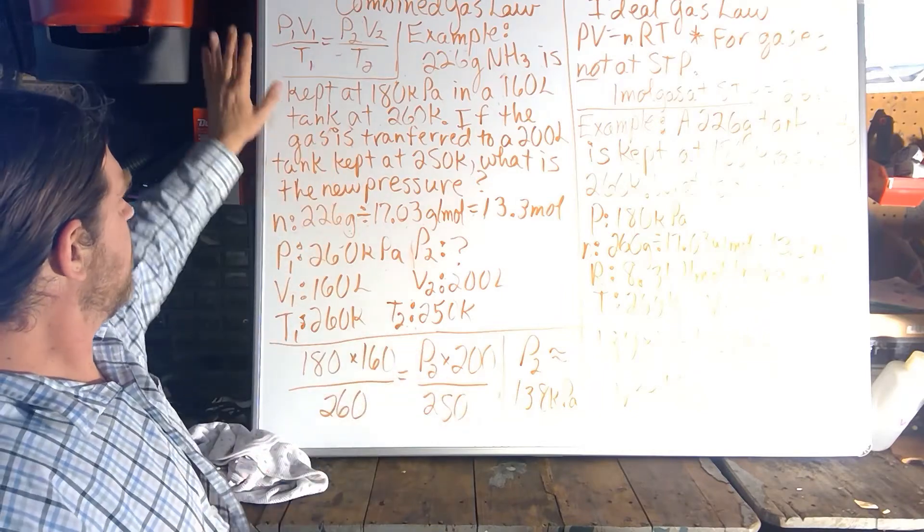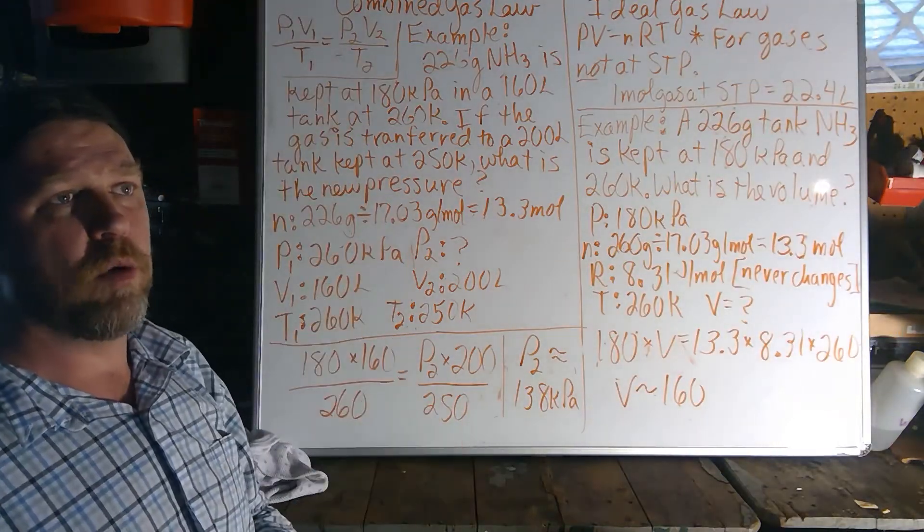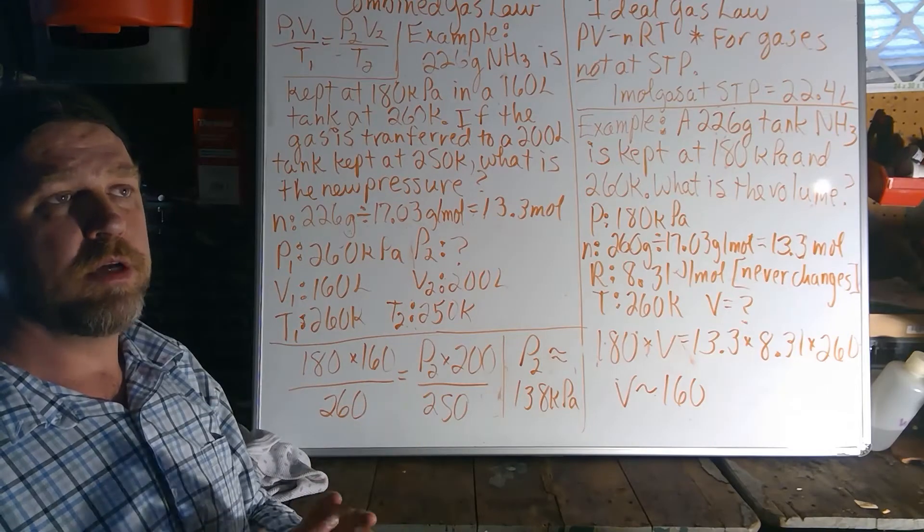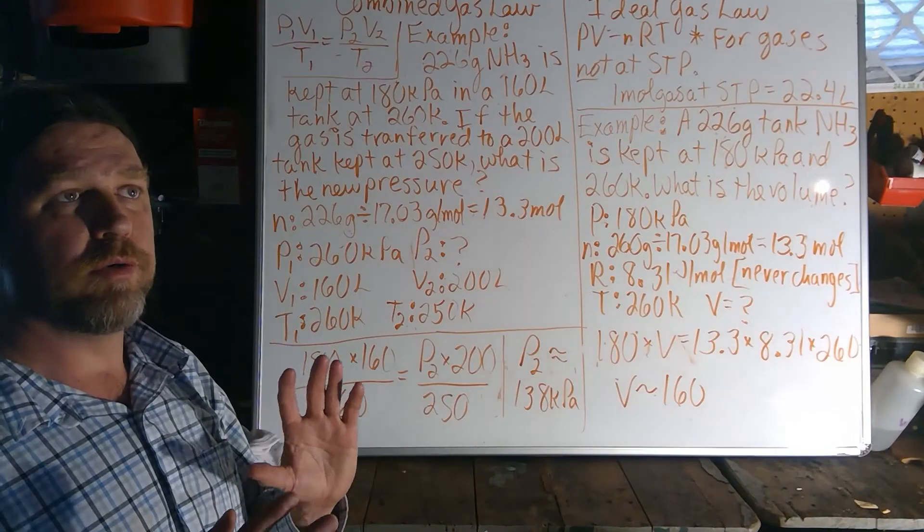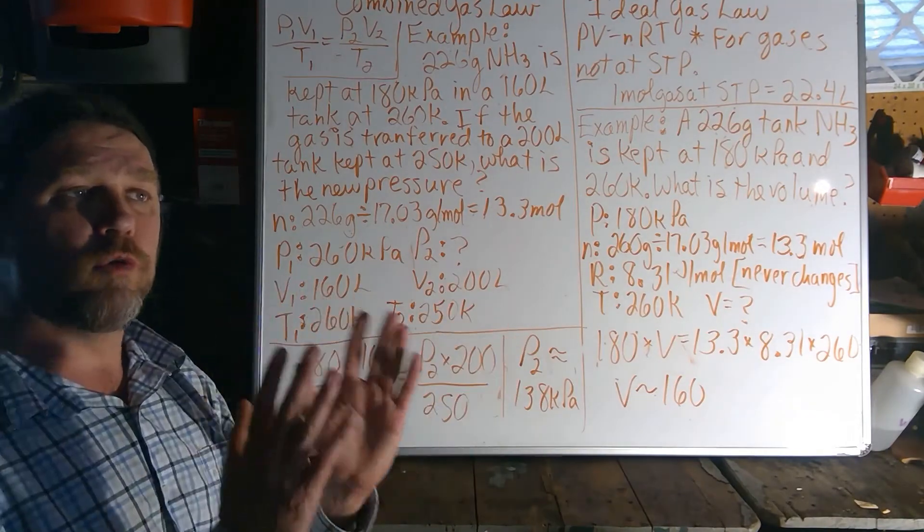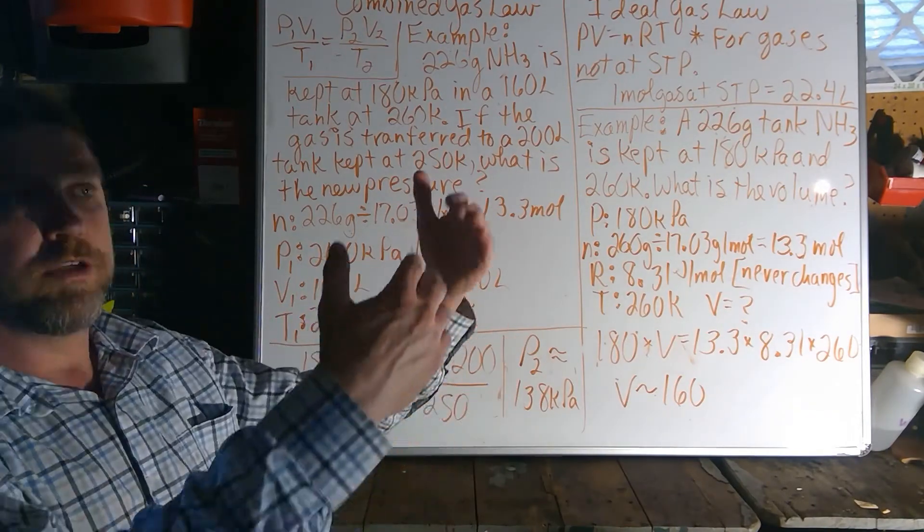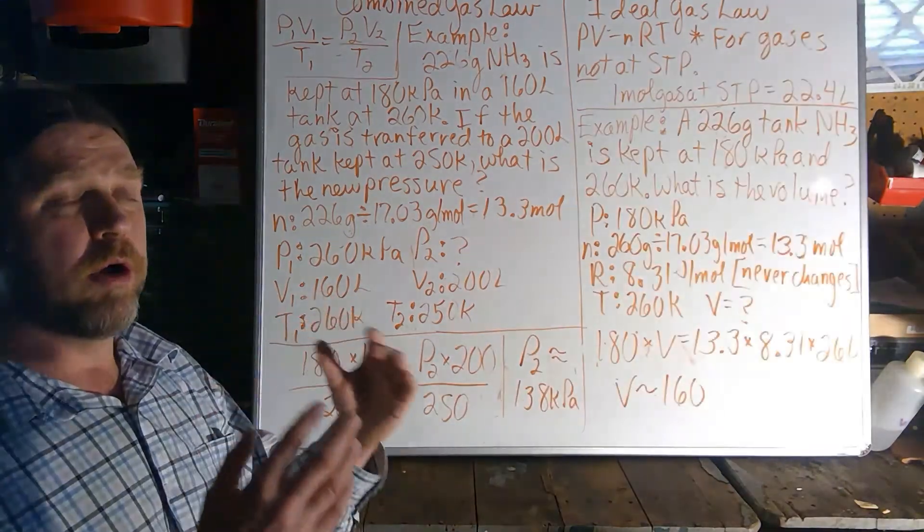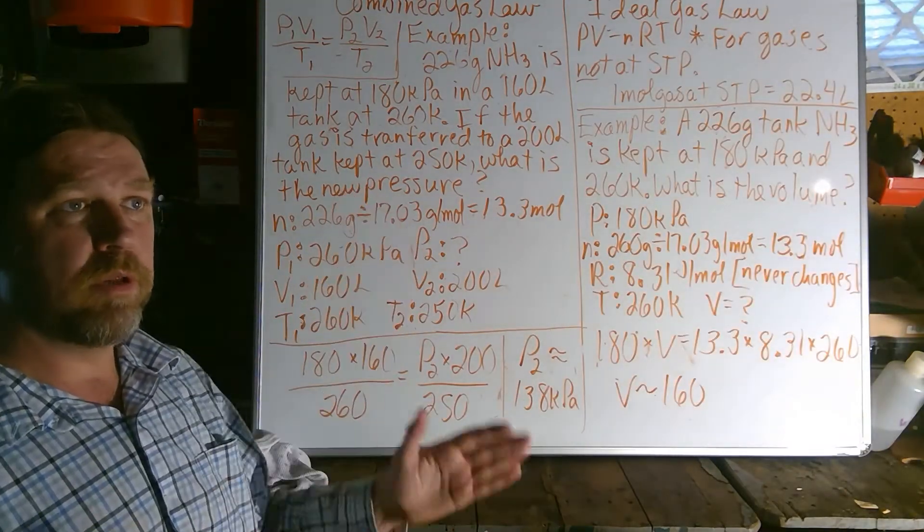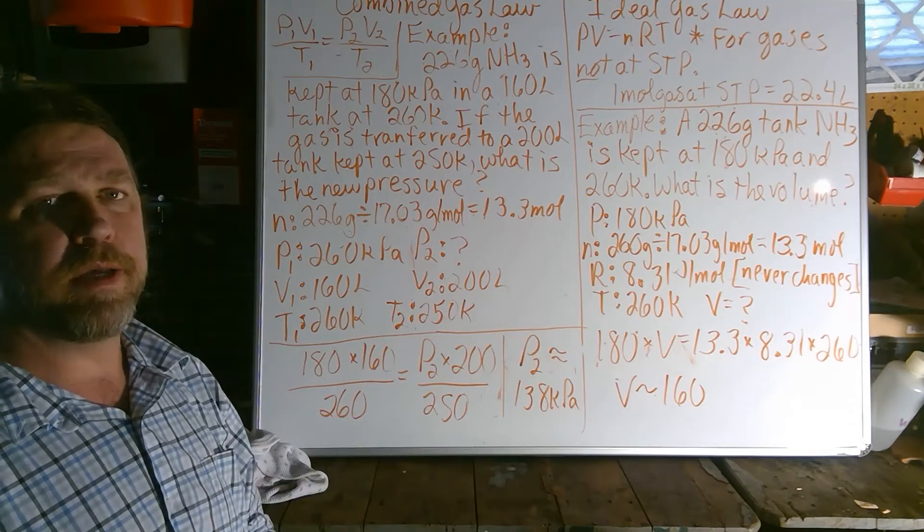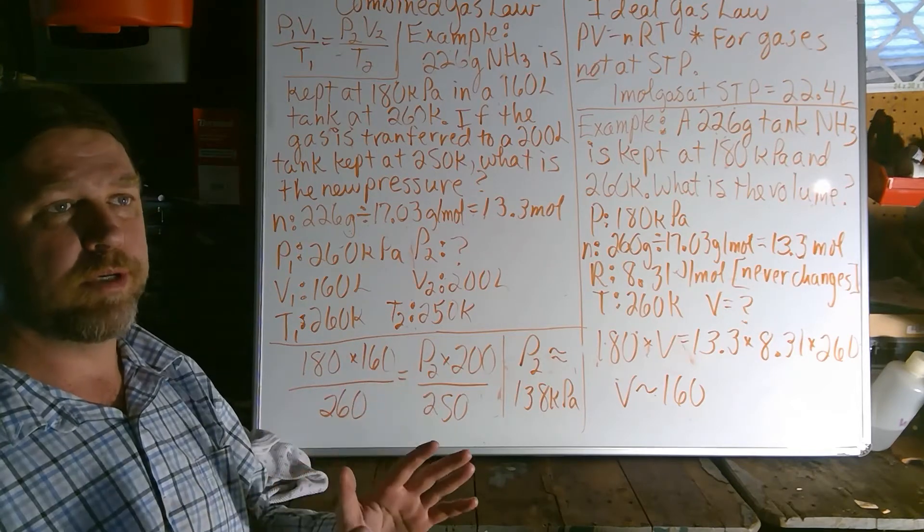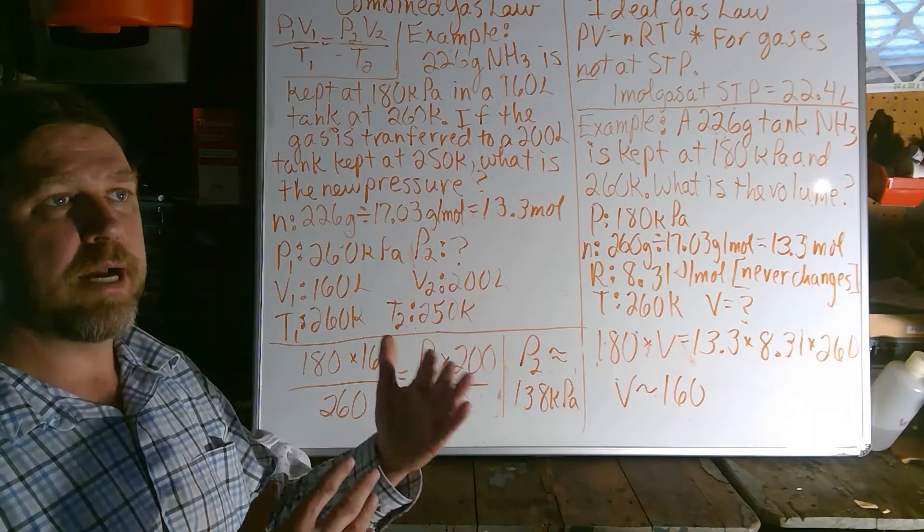Conversely, Gay-Lussac's law takes volume out of the equation and assumes that it's fixed in size before and after our changes in pressure and temperature. And this is also a direct relationship. As temperature goes up and down, pressure does, too, at a very linear rate if you were graphing it. Once again, it has to be in Kelvin where this relationship breaks down in terms of its exact linearity.